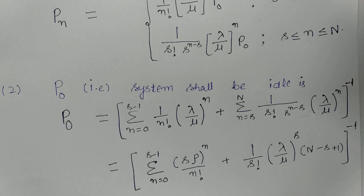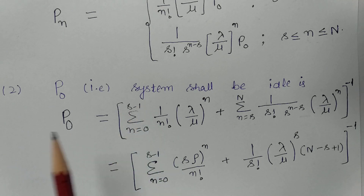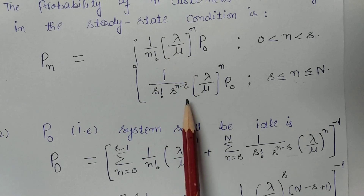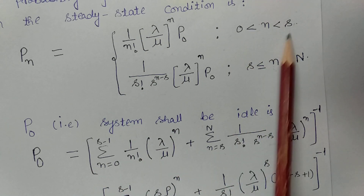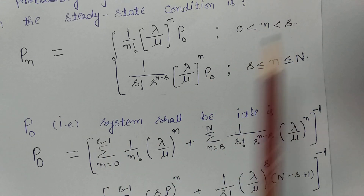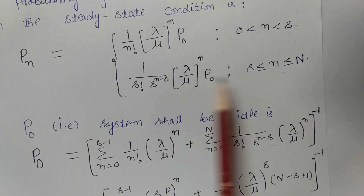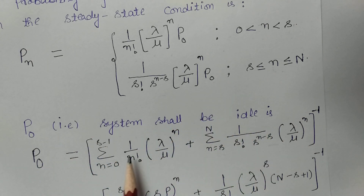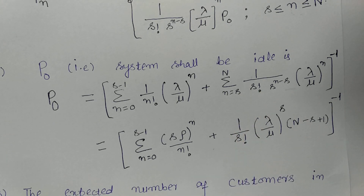P_0 is the probability that the system shall be idle. It is calculated as the inverse of the sum of two parts: the first summation runs from N = 0 to S−1 using (1/N!)(λ/μ)^N, and the second summation runs from N = S to capital N. After simplifying, a compact closed-form expression is obtained. You may remember either the original sum or the simplified form — both are equivalent.